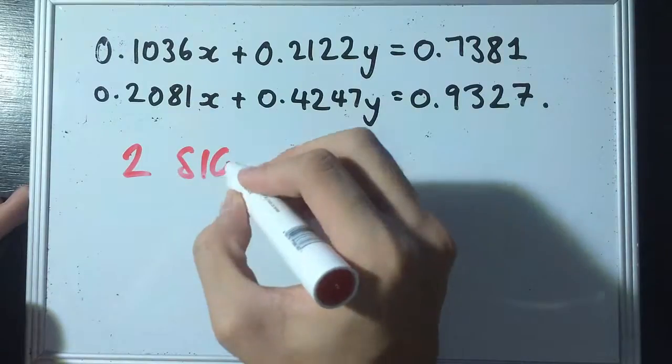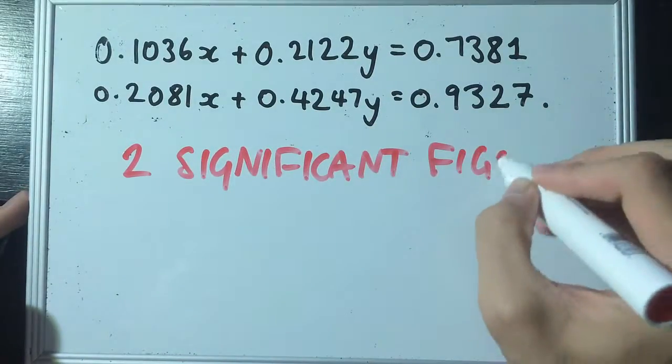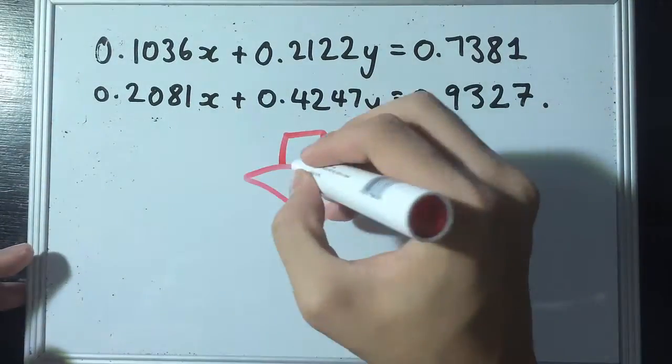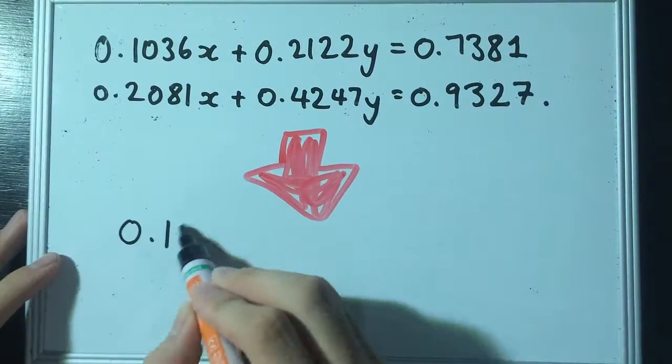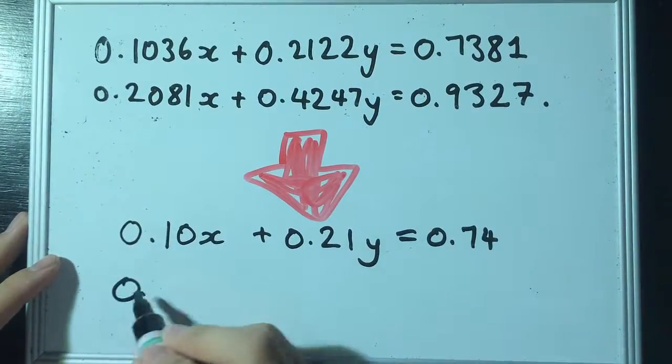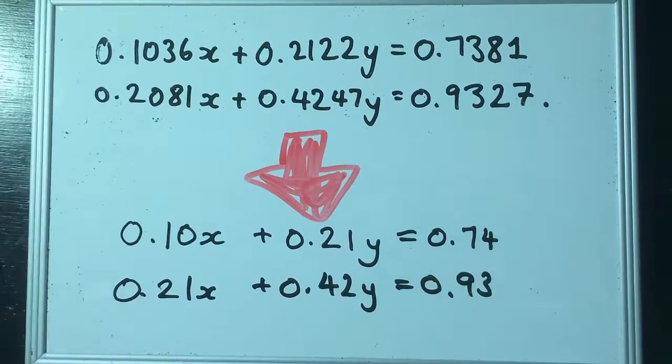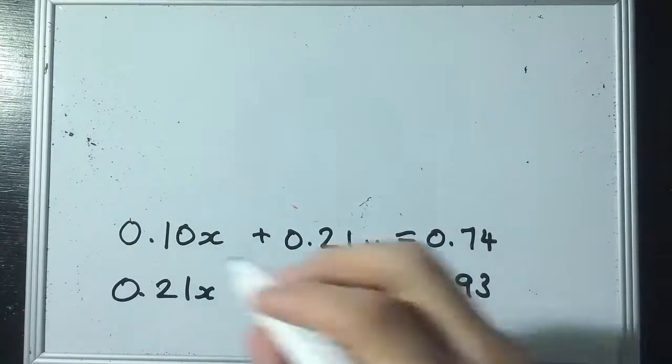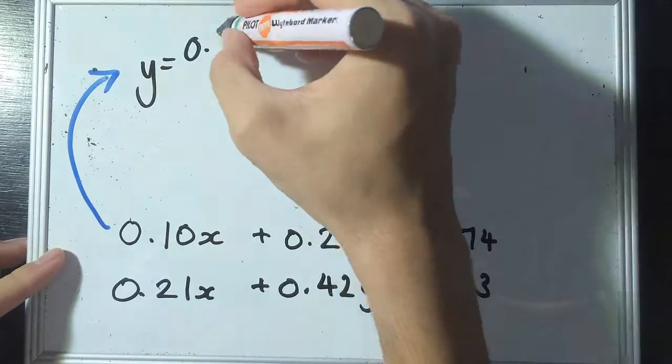At first, we'll keep everything in two significant figures, all the answers, all the numbers. So, we'll convert the original equations so that it only has two significant figures. We'll take the first equation and rearrange it so that y is the subject.